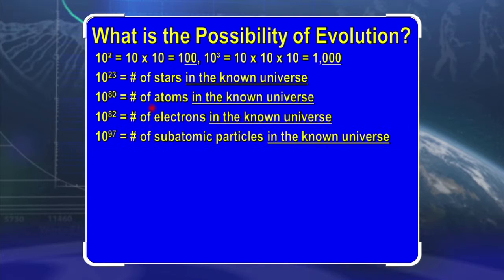And if you write the number 10 with the number 97 above the upper right hand corner, that's the number of subatomic particles in the entire known universe. Again, not all of them, just the ones we know about.